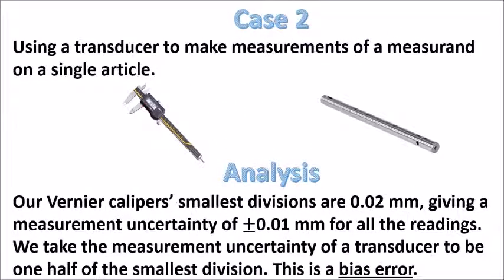Like in any additional data, we take the measurement uncertainty of a transducer to be one half of the smallest division. This is called the bias error.